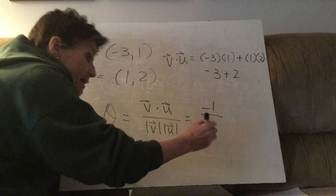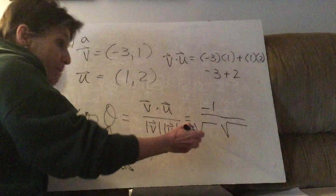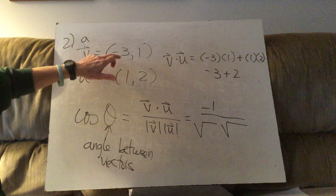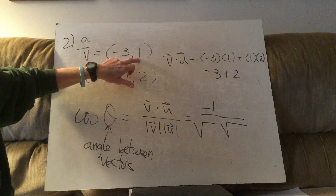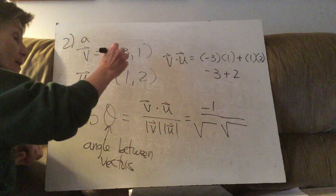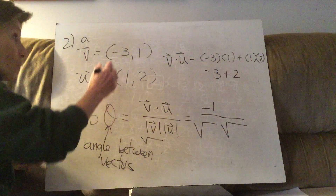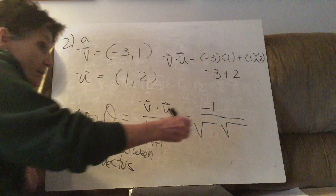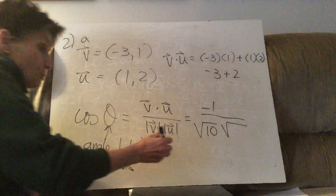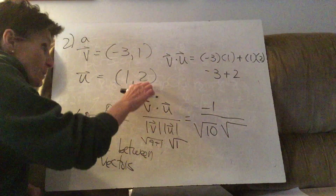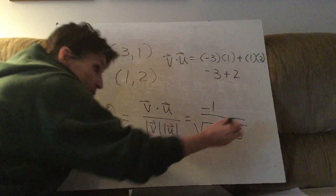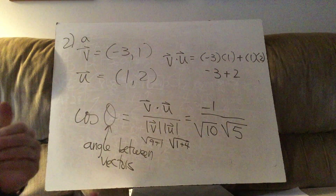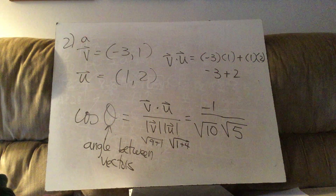Now we divide that by the two magnitudes of the vectors. To find the magnitude, we square the first component, square the second, add them up, and take the square root. The magnitude of v is the square root of 9 plus 1 — that's the square root of 10. For u, we do the same: square the first, square the second, add together and take the square root, so that's root 5. Finding magnitude is the Pythagorean theorem.